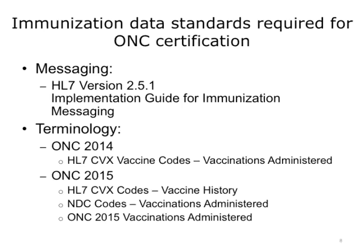ONC certification requires that standards are used to communicate immunization information between systems. The standard for immunization messaging is HL7 version 2.5.1 — specifically, the HL7 version 2.5.1 Implementation Guide for immunization messaging. Standard code systems are used to represent the type of immunization being communicated. For ONC-2014 certification, HL7 CVX was used. For ONC-2015 certification, HL7 CVX can still be used for historical immunizations; however, to communicate about newly administered immunizations, NDC codes are now required.